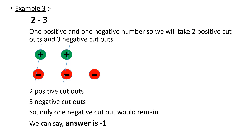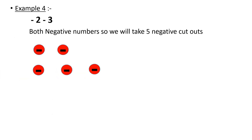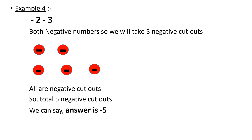Now the last example: minus two minus three. In this case both are negative numbers. So we take two negative cutouts for minus two and three negative cutouts for minus three. All the cutouts are the same color, meaning five negative cutouts total. So the answer is negative five.